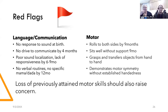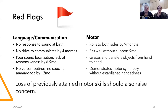Motor milestones build smoothly on each other — rolling leads to crawling position, which leads to crawling, which leads to walking. Language development is more of a roller coaster — gaining words, losing words, saying a word once and not again for months. But two key skills that should not go away are: using words to make wants known, and reciprocal communication. If those foundational skills regress, that's worth addressing.